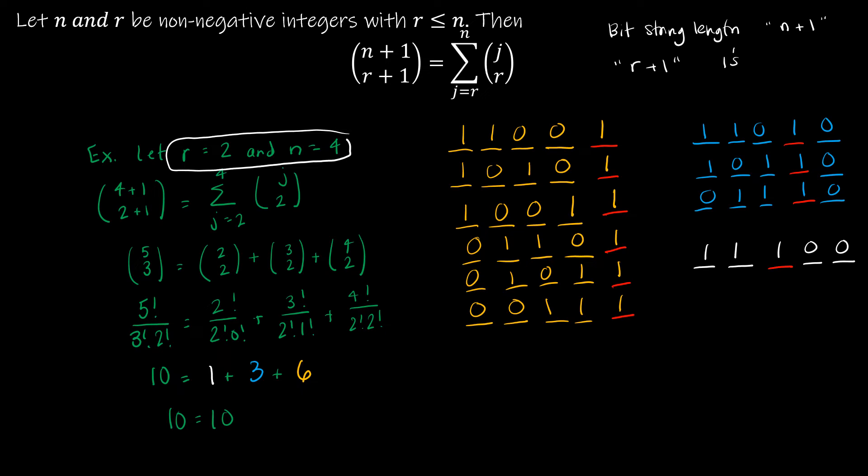So in this case, that's 3 ones. So you can see in the example on the right, that all of my bit strings have exactly 3 ones.